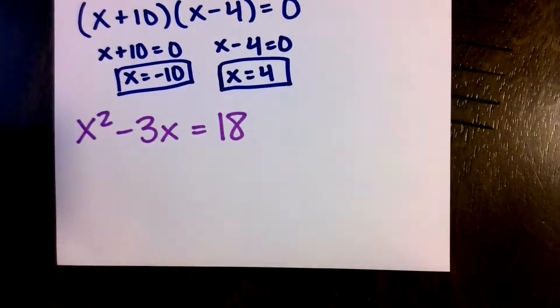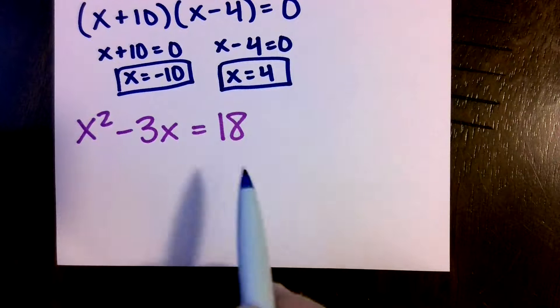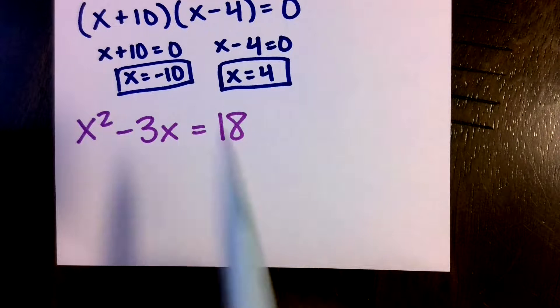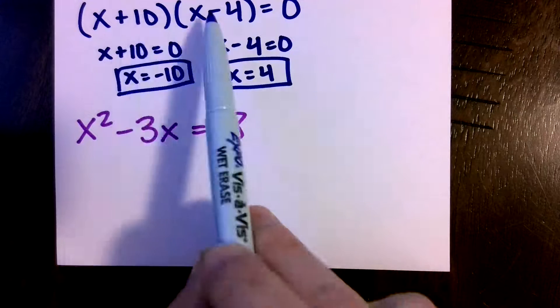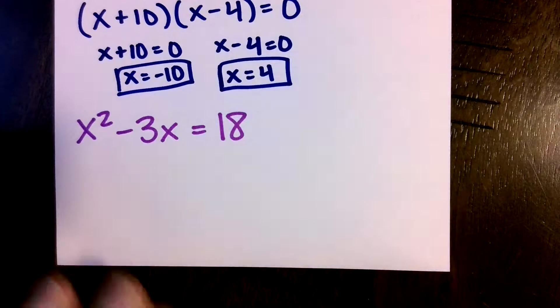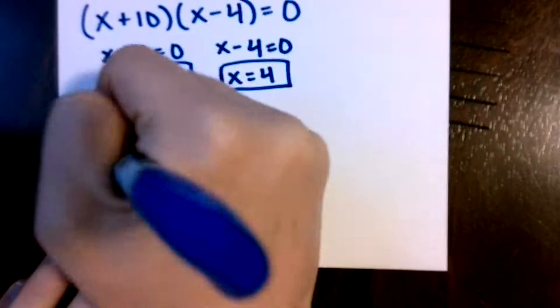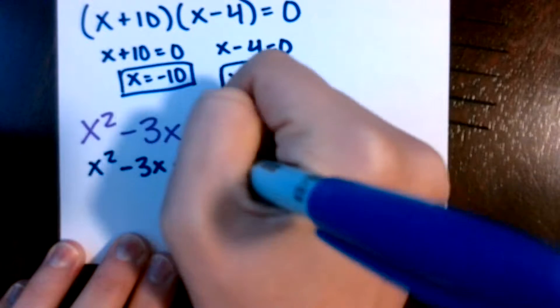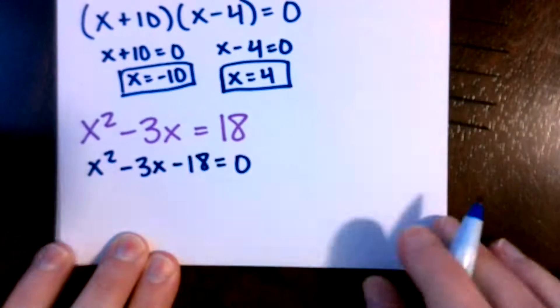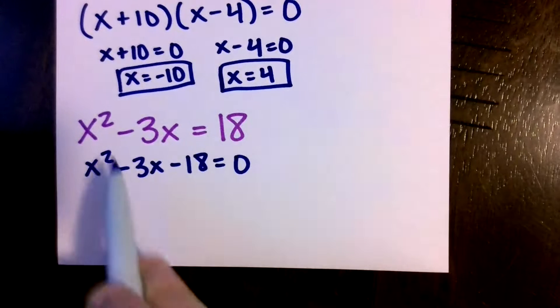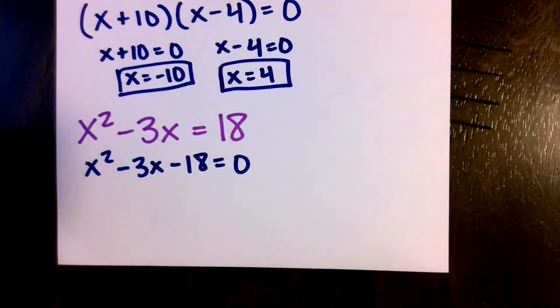Last one. Only difference here is that it wasn't set equal to 0 and I can't factor and solve if it's not set equal to 0 because we have that whole situation where the two factors multiplied to be 0 so one of them had to be 0. I need that to be happening. So for this one, I am going to start by subtracting that 18 over. You could have more things over here and you'd need to subtract that over and combine it.